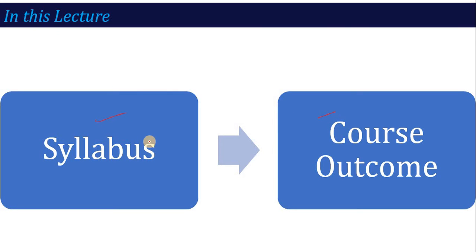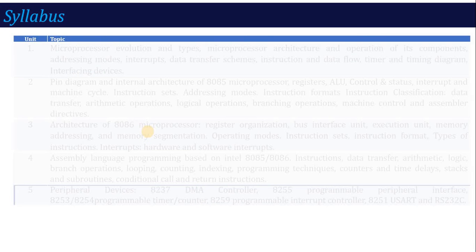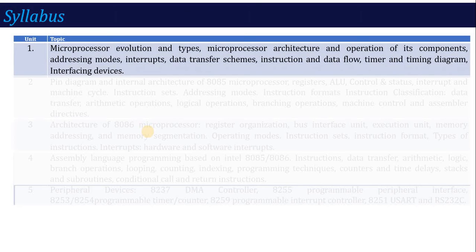First let's talk about the syllabus. Microprocessor is a full-credit subject with five complete units. In unit number one, you will study microprocessor evolution and types — what types of microprocessors evolved, which was the first microprocessor, and the basic microprocessor evolution.